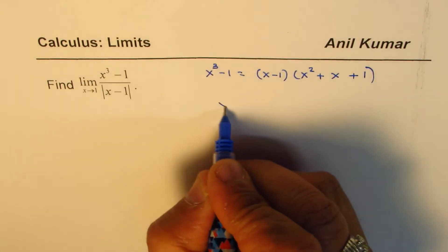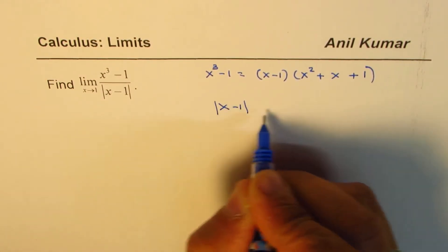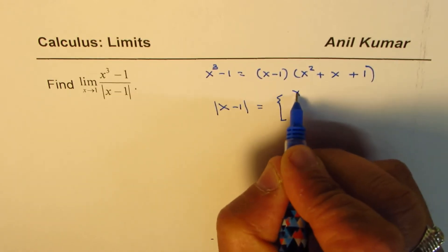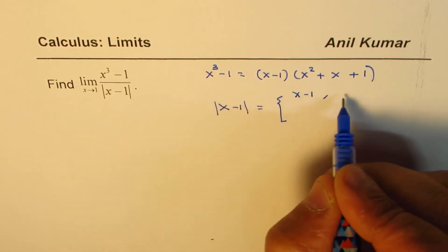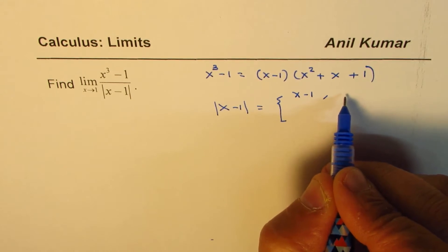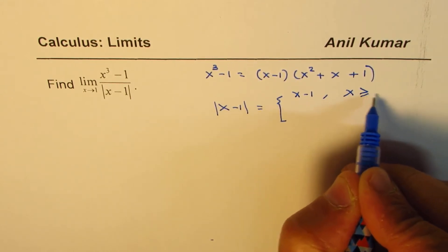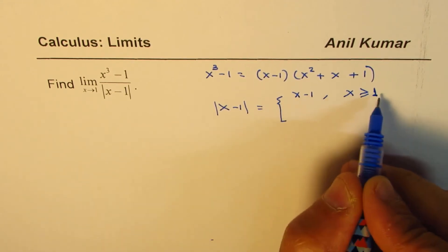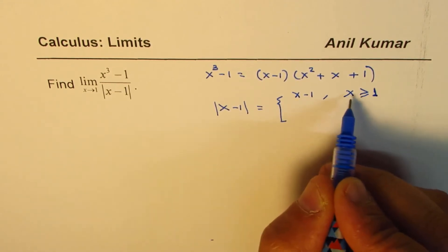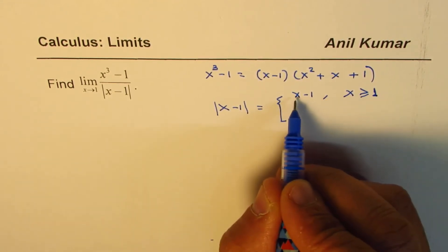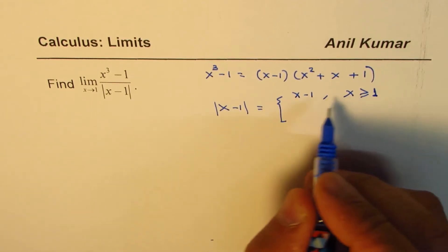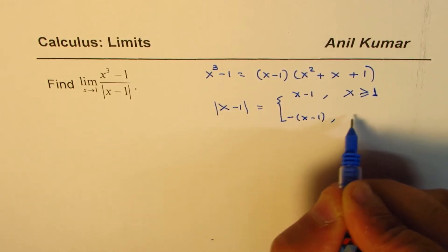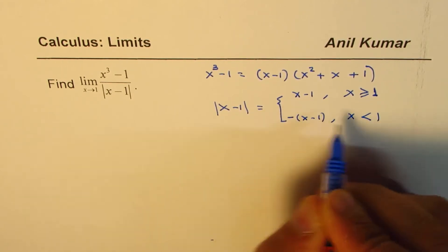The absolute value of x minus 1 can be written as positive x minus 1 when x minus 1 is greater than or equal to 0, that is when x is greater than or equal to 1. And it equals negative of x minus 1 when x is less than 1.